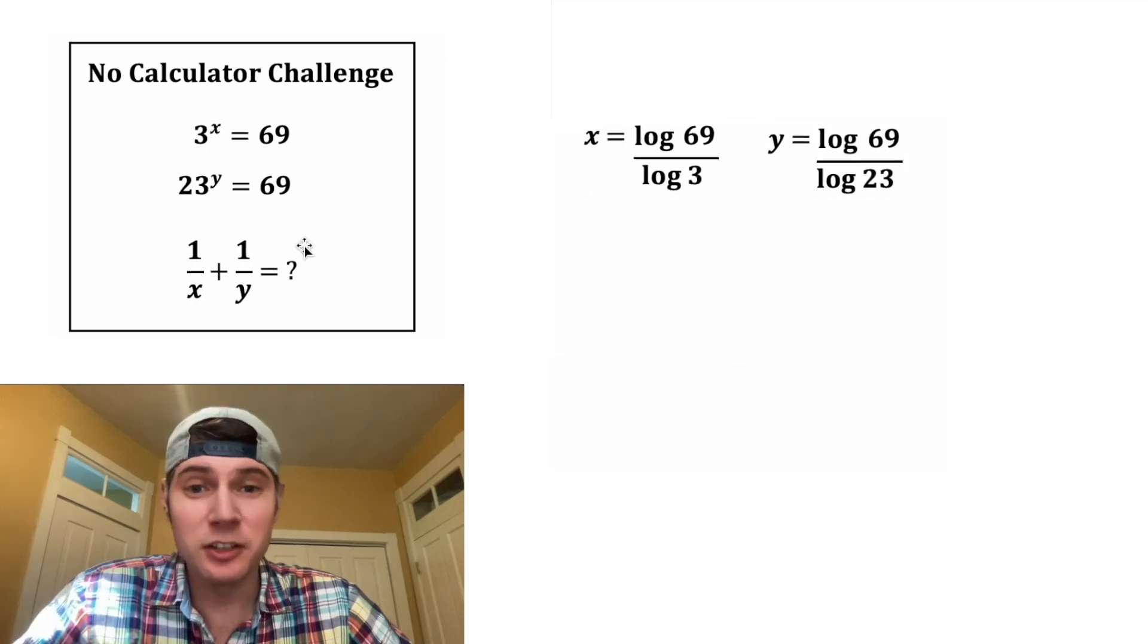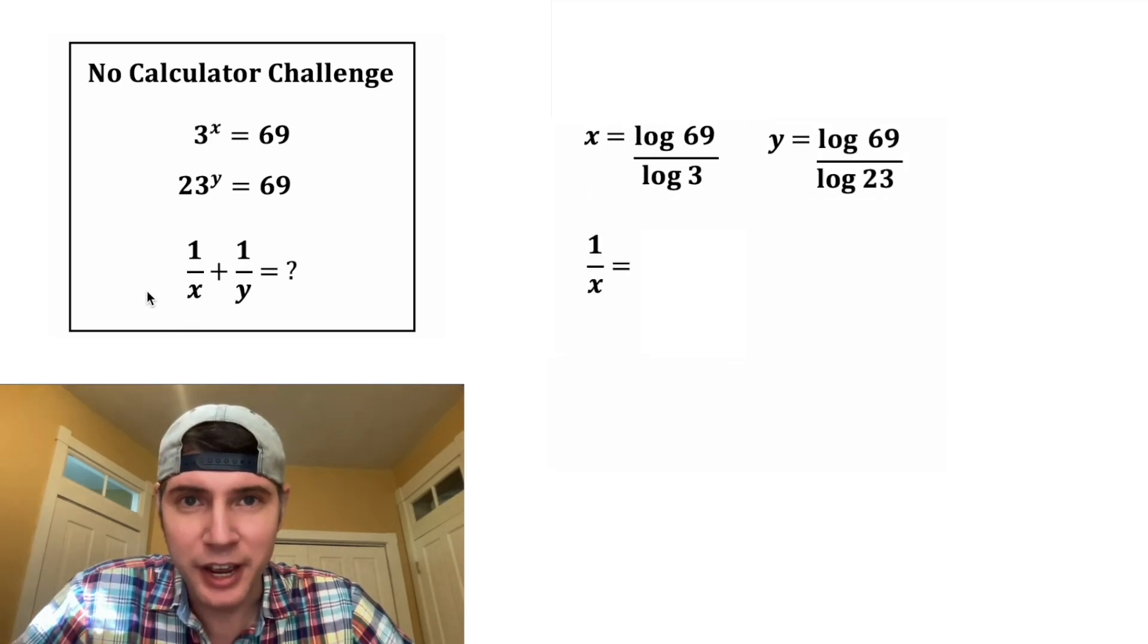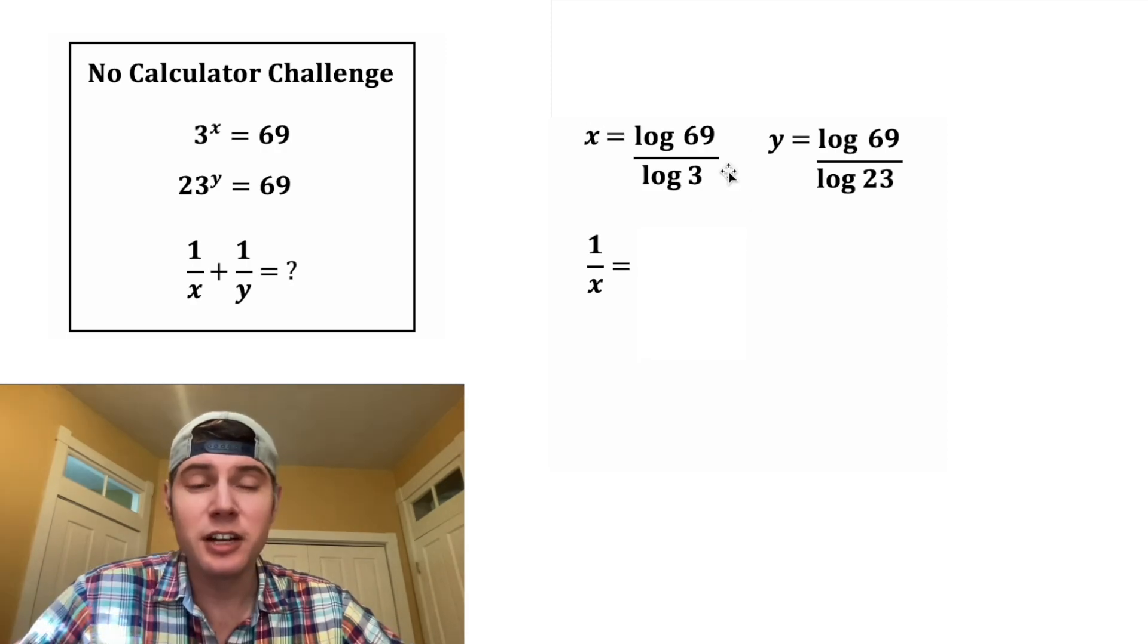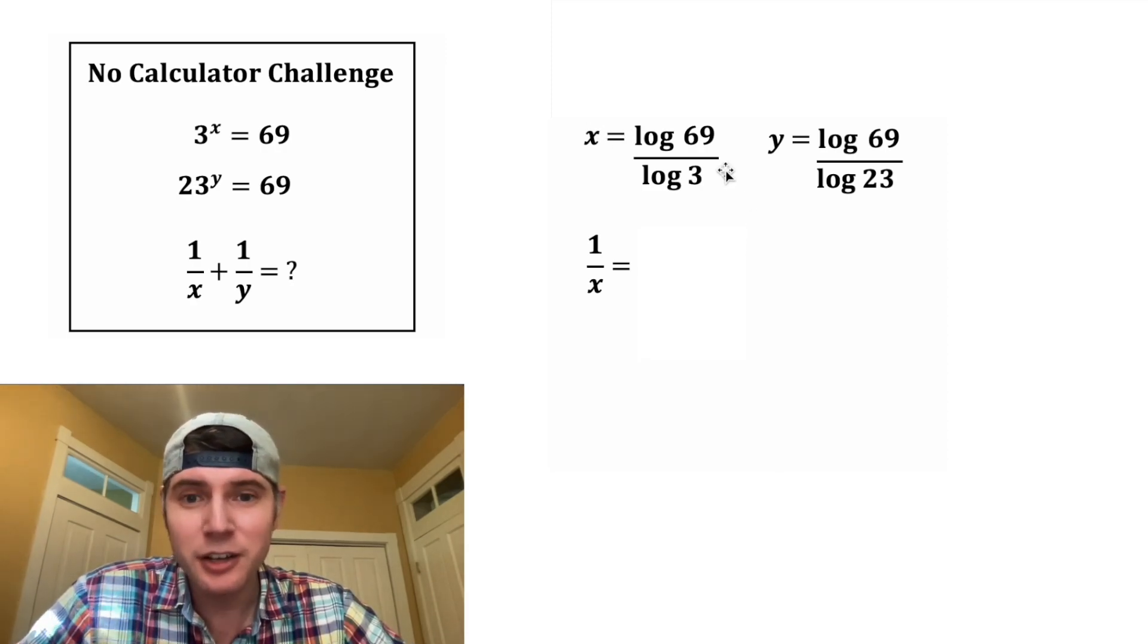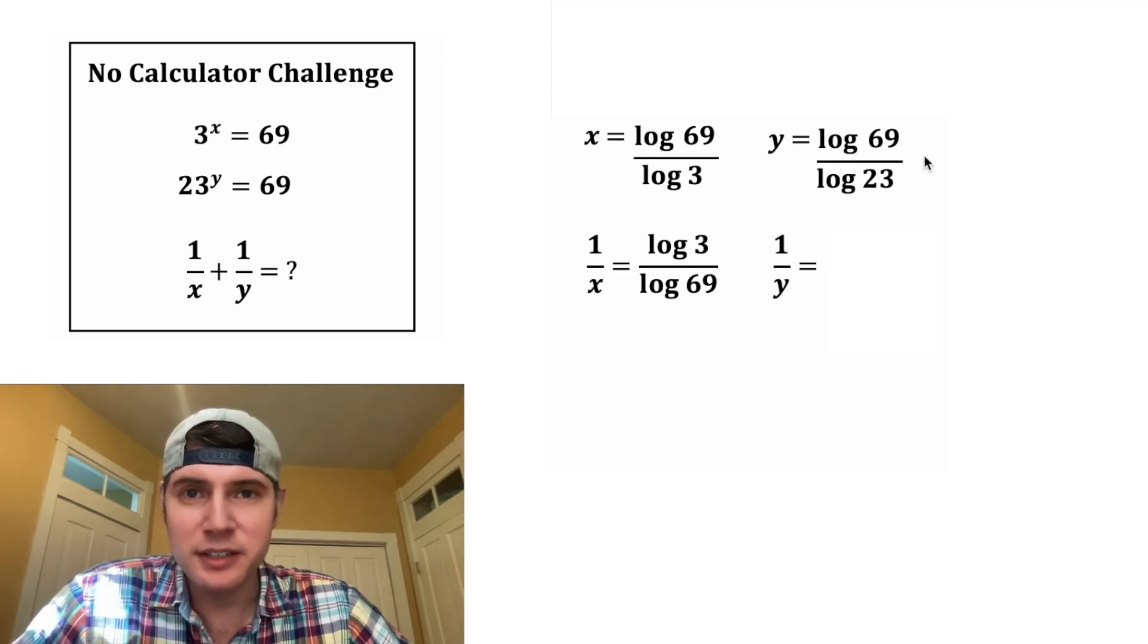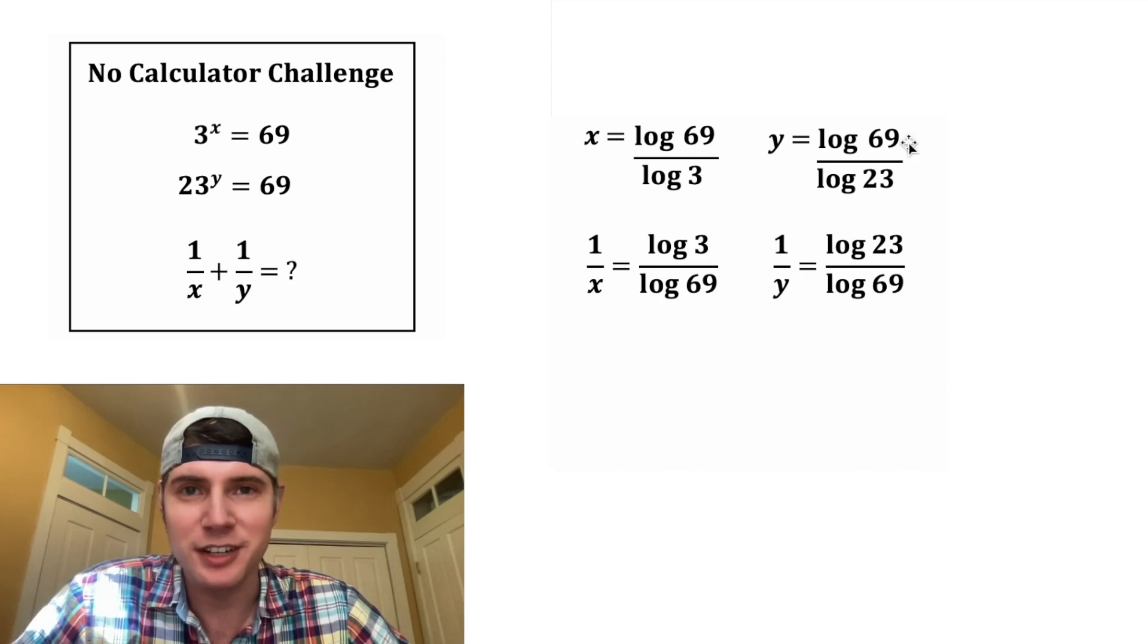So let's move these up here. And let's work on this. First, I want to look at 1 over x. 1 over x ultimately means the reciprocal of x. So instead of log 69 over log 3, we can rewrite it as log 3 over log 69. And 1 over y is the reciprocal of y. So we can write that as log 23 over log 69.